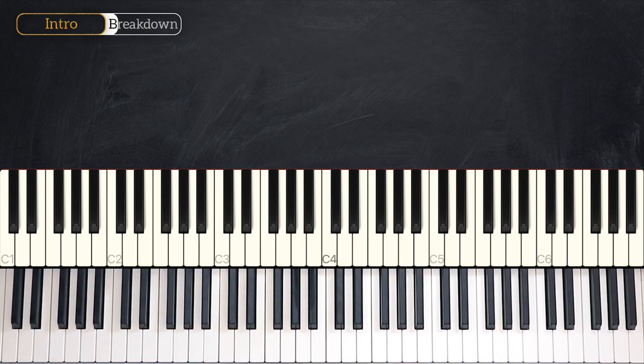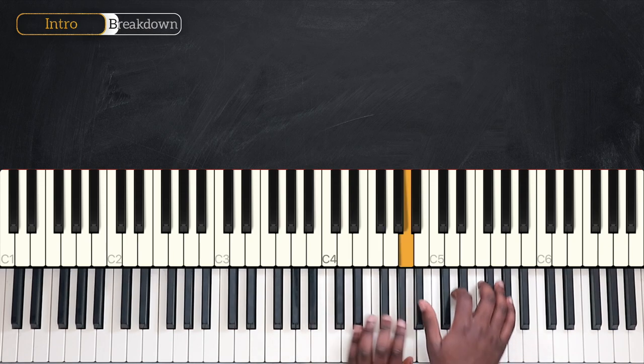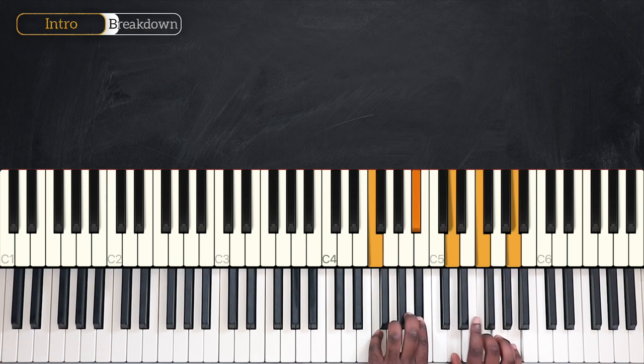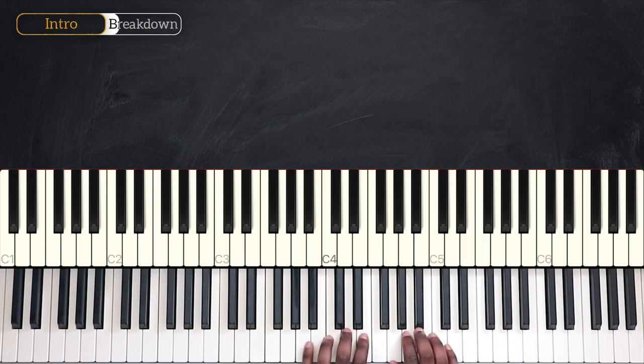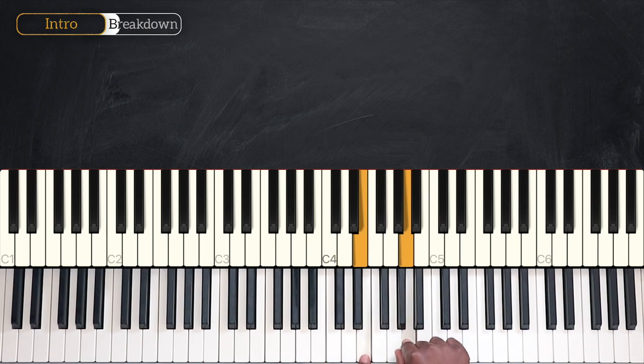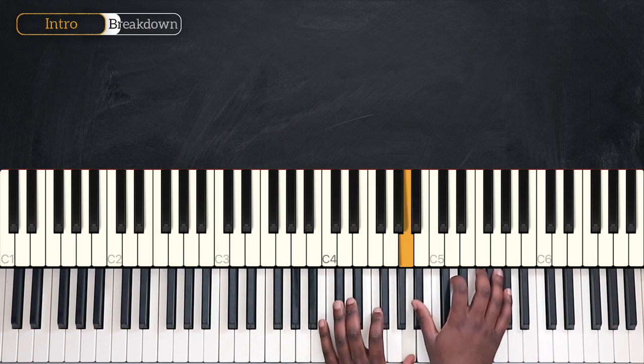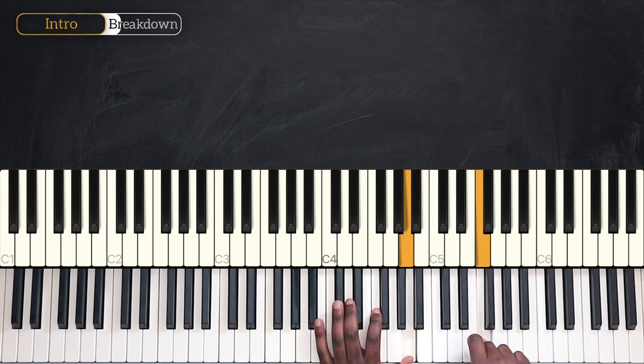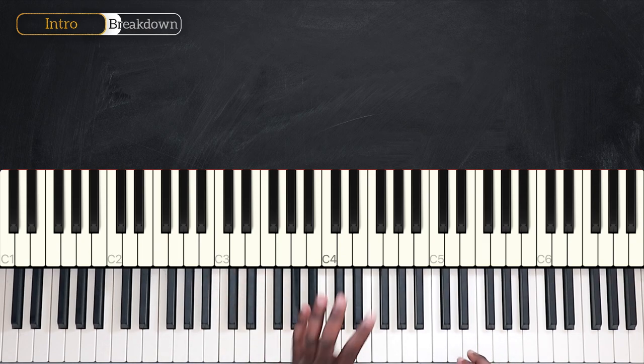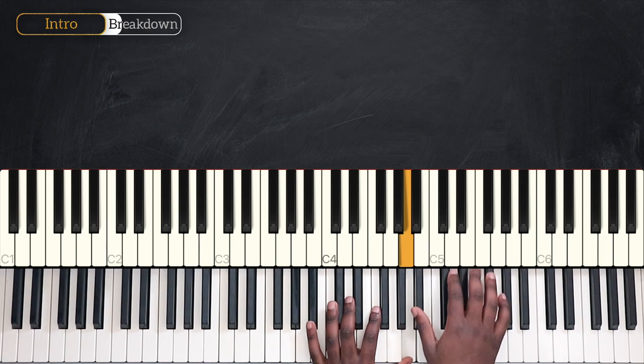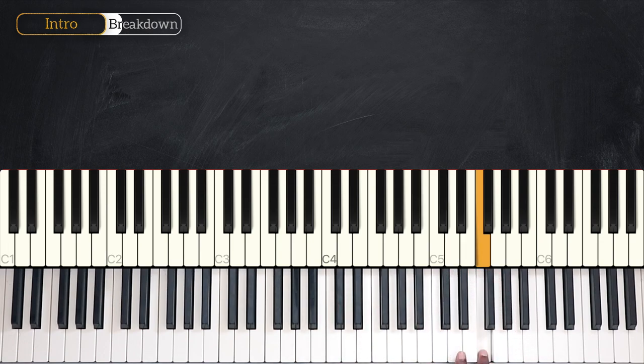Here's the first part of the intro. So we're going to arpeggiate the G minor 9 chord, playing one note at a time. First Bb, then D, F, A. After that, Bb, D and F.